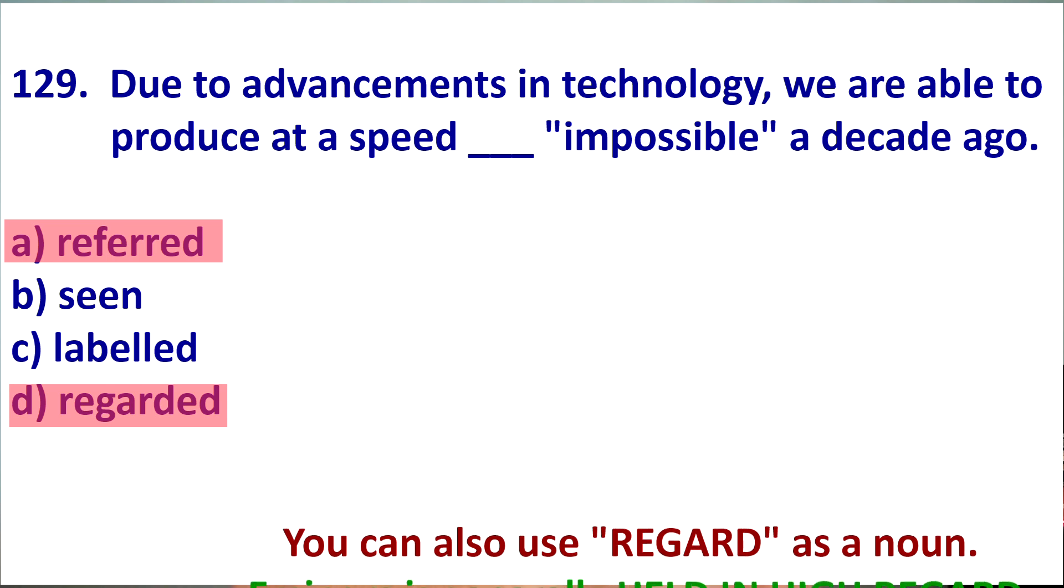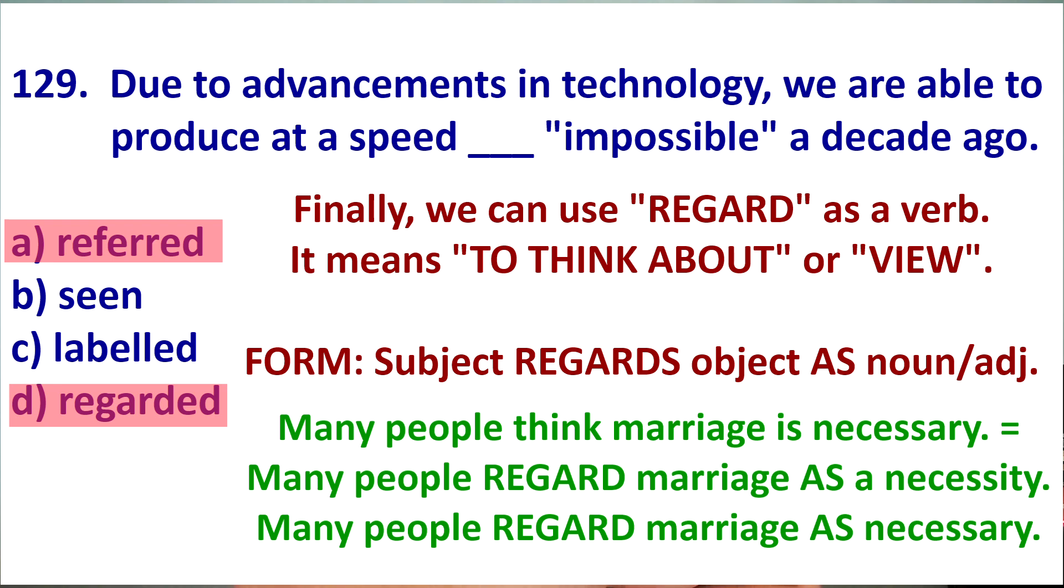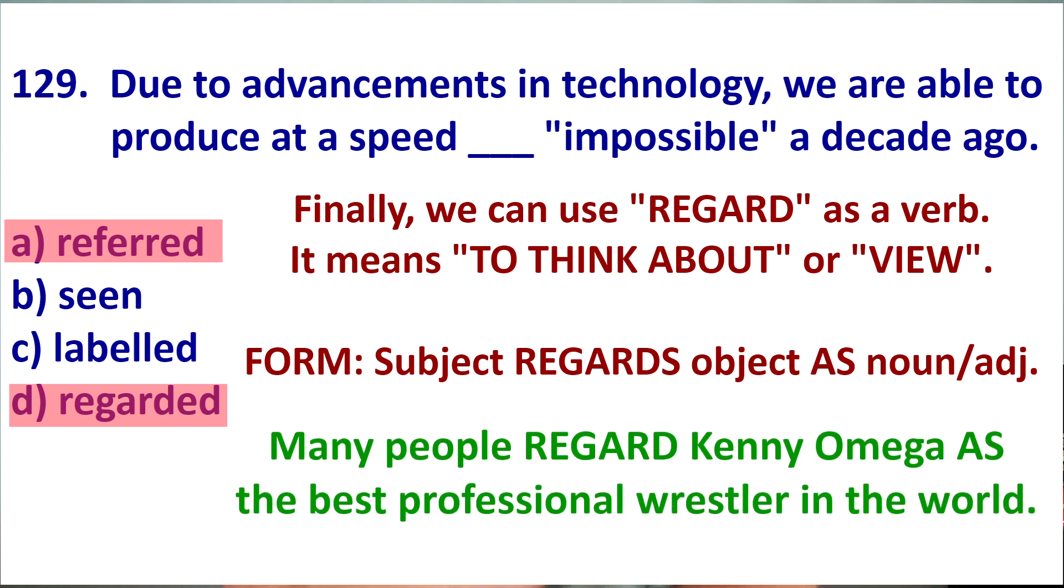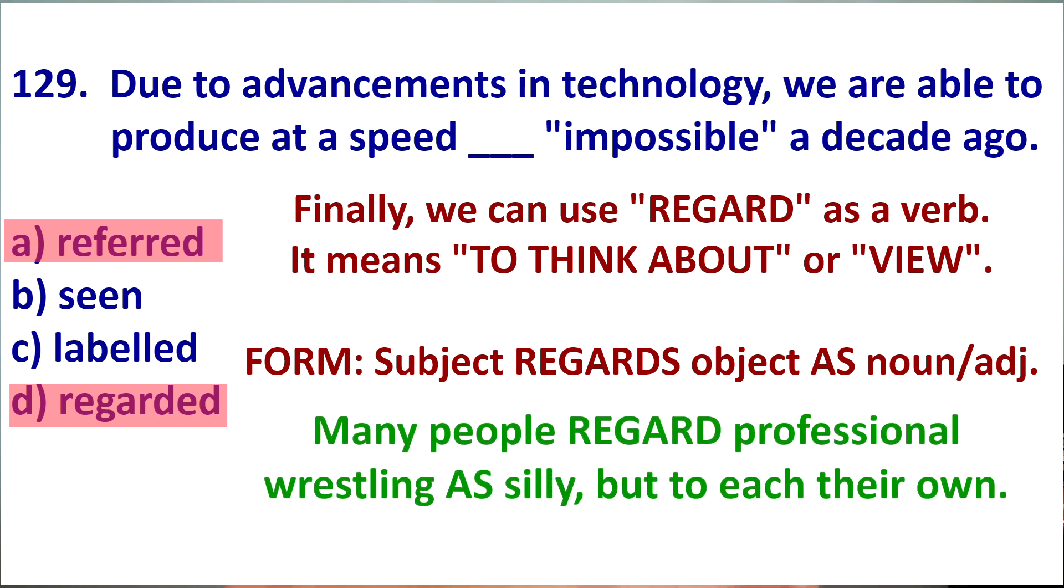But this is not how we're using regard here. Here, we are using regard to mean to view or think about something in a certain way. For example, if many people think that marriage is necessary, you could say many people regard marriage as a necessity. So, as a noun. Or, you could say many people regard marriage as necessary in life. Now, I don't. But many people do. If we're talking about professional wrestling, maybe your favorite sport, maybe not. But many people regard Kenny Omega as the best professional wrestler in the world. Also, many people regard professional wrestling as silly. But I don't. So, we can see the form. If you say, I think something is, you could say, I regard something as noun or as adjective.